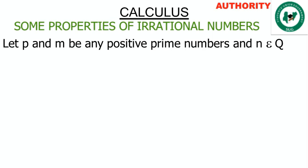Let p and m be any positive prime numbers, and let n be a rational number. We use these three things, represented by letters. Remember, p and m must be prime numbers — numbers divisible only by one and themselves, such as 2, 3, 5, 7, 11, and 17. And n is a rational number.